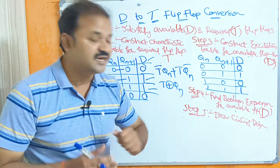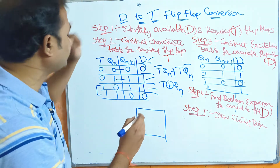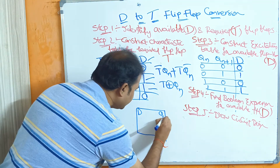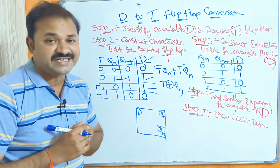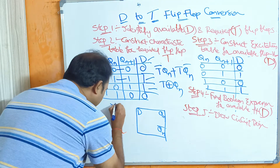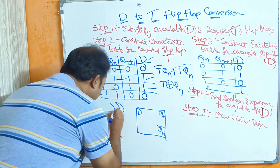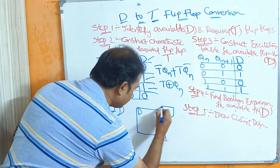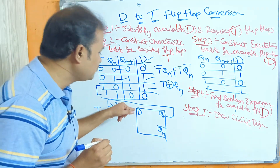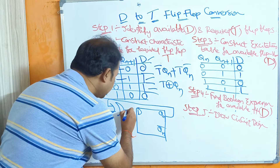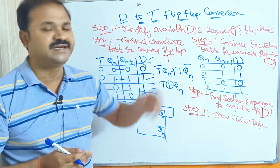The last step is to draw the circuit diagram. The input is T and the outputs are Qn and its complement. The formula is T XNOR Qn, so we use an XNOR gate. The XNOR gate receives two inputs: T and Qn, and produces T XNOR Qn as the output, which is passed to the D input of the D flip-flop. This is the circuit diagram for converting a D flip-flop to a T flip-flop.